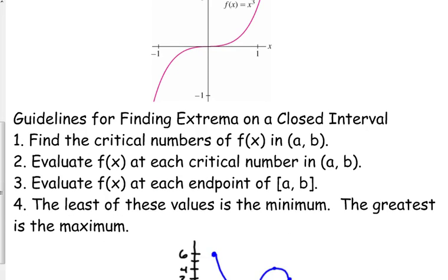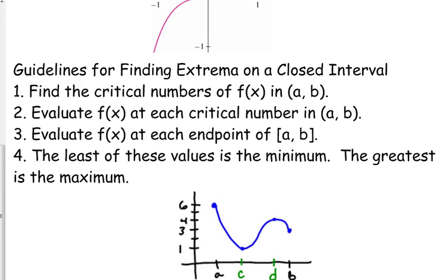So if you are asked to find extrema on a closed interval, first you need to find the critical numbers. How do we do that? We take the derivative, set it equal to zero, and find the places where it's undefined. Then — and this is the part people tend to forget — you have to evaluate your function. Step two: evaluate your function at each critical number.